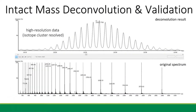Lastly, a new module of intact mass analysis is included. Here we are looking at an antibody protein light chain intact mass data at the bottom and the deconvolution results on top. This data was acquired with high resolution. Therefore, you can see the resolved isotope clusters.